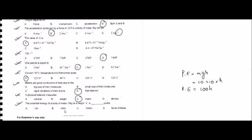Mass is 10 kg, g for Earth is taken as 10, and height is h. Multiplying: 10 times 10 gives 100, so potential energy equals 100h joules. Looking at the options: A is 10h — not correct; B is 100h — that matches the calculation; C is 1000h — not correct; D is none of these — not applicable. So option B is the correct answer.